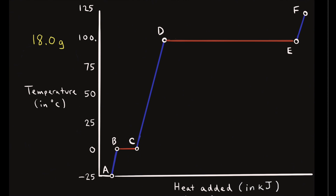Let's look at the heating curve for water. A heating curve has temperature on the y-axis — in this case in degrees Celsius — and heat added on the x-axis, in kilojoules. We have 18.0 grams of ice and our goal is to calculate the total heat necessary to convert that 18 grams of ice at negative 25 degrees Celsius to steam at 125 degrees Celsius.